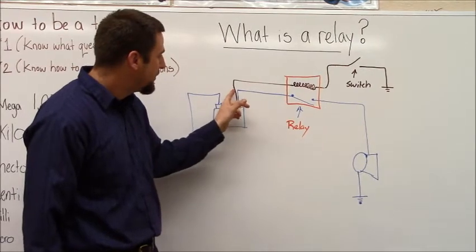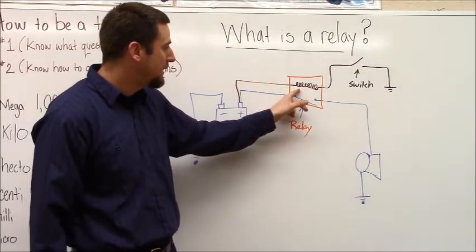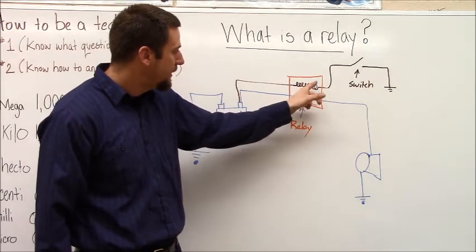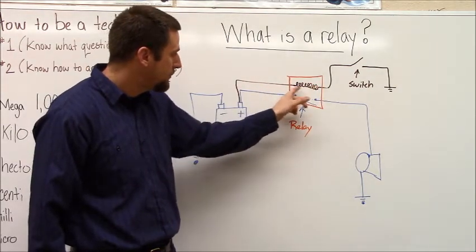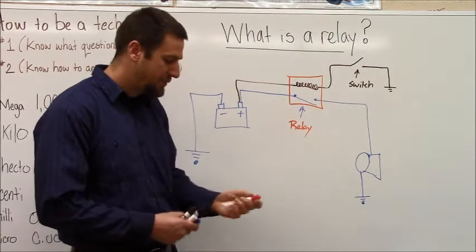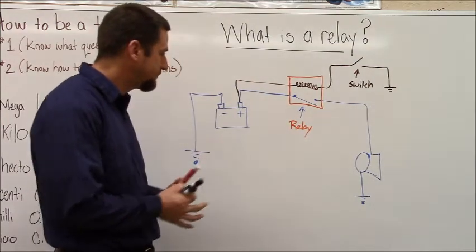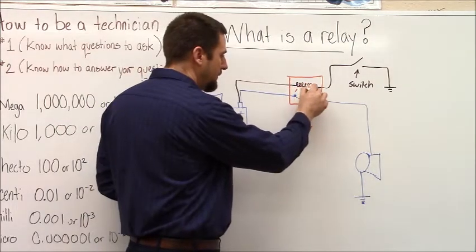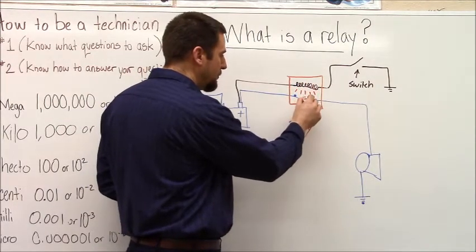We can run a very small diameter, small gauge wire to the relay, and in the relay all there is is a coil wire, and when we run current through the coil wire, it produces a magnetic field. The magnetic field pulls the switch closed.